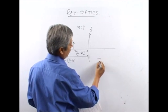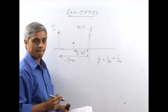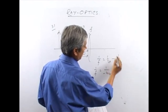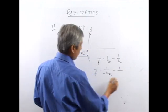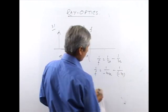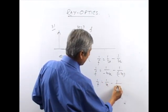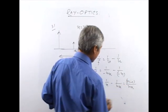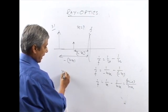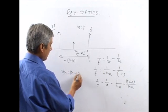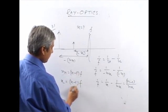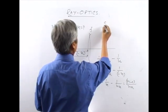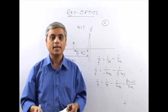Applying the lens formula, 1/F = 1/V − 1/U. Here V = −Nx and U = −x. So 1/F = 1/(−Nx) − 1/(−x) = −1/(Nx) + 1/x = (N−1)/(Nx). Therefore Nx = (N−1)F, giving x = (N−1)F/N. The answer is C: (N−1)/N × F.